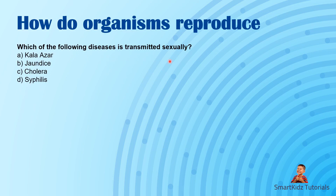Which of the following diseases is transmitted sexually — Kala-azar, jaundice, cholera, or syphilis? You should know the sexually transmitted diseases: syphilis, gonorrhea, and also AIDS, which is a condition caused by HIV.